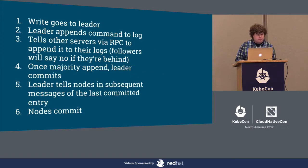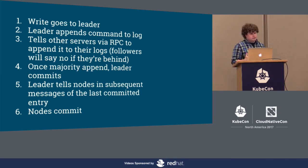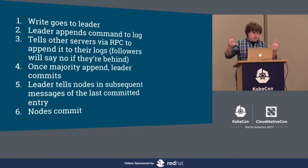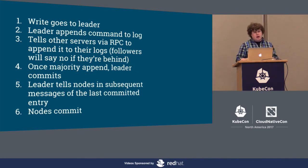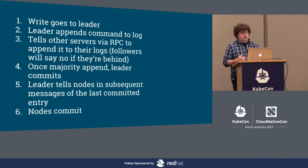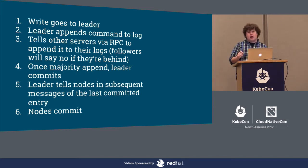In Raft, all writes go to the leader. The leader appends the command to its log locally, then tells other servers via RPC to append it to their logs as well. If a follower is behind, it rejects the append. Once a majority have appended the entry locally, the leader commits it to its own log. In subsequent messages, the leader informs followers of the index of the last committed entry, and nodes commit everything up to that index. So if the leader has sent up to index 12 and says 12 is committed, a node that hasn't committed 9 through 12 will commit all of them.